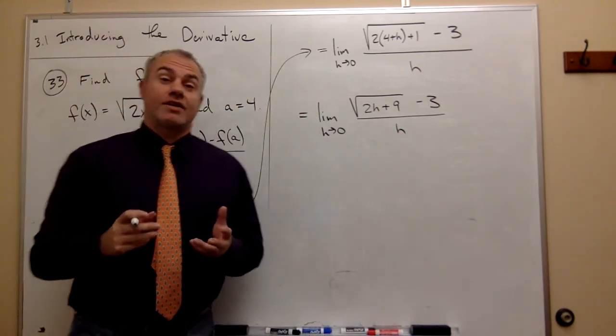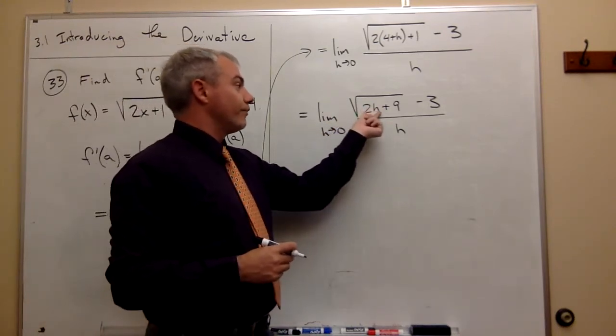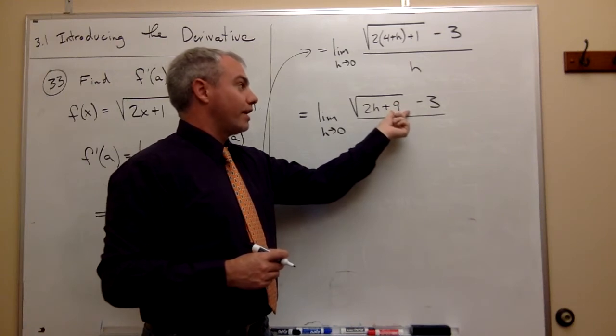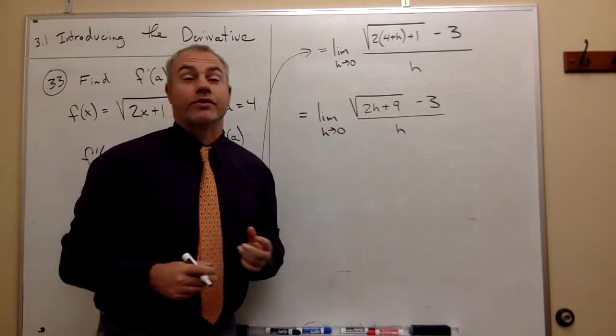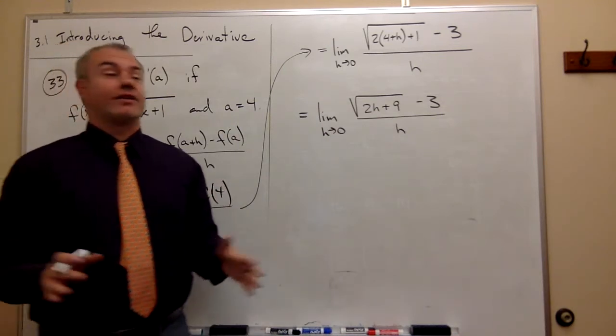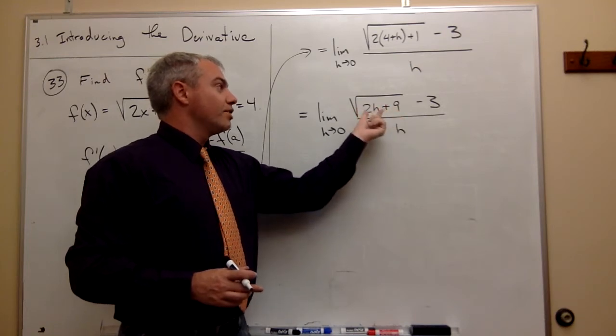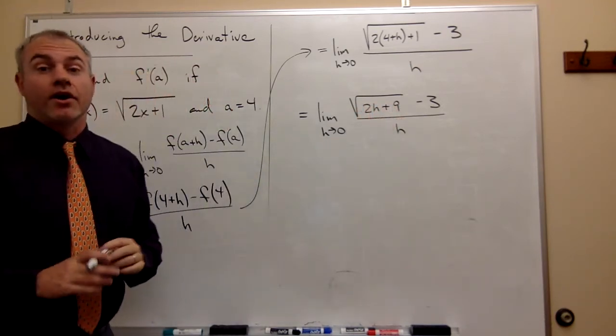Now, something a lot of students would really love to be able to do is to take the square root of this guy plus the square root of 9 which would give 3 and then take 3 minus 3 is 0 and I'd just be left with the square root of 2h. You can't do it. If the two numbers here are separated by a plus, you can't break this up into square roots, so don't try.